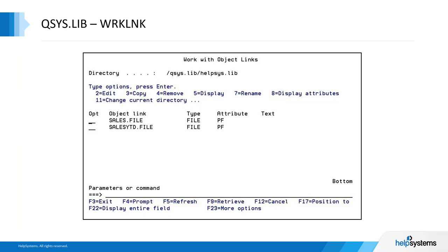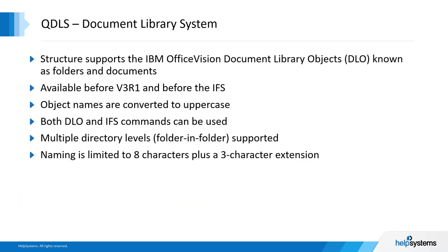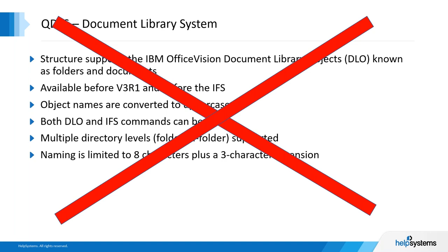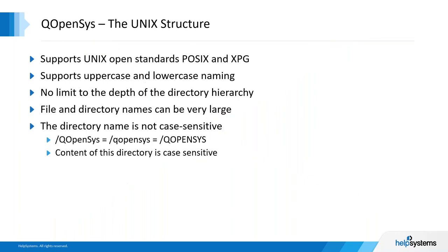Now let's look at another file system under the root: QDLS. This is an older file structure. You can see something called Office Vision listed there — Office Vision is long dead. The naming convention has eight characters on the left of the period and three on the right. The point is that many customers are still using this file system; however, it doesn't perform well and we really want you to get out of it. If you are still using it, it's time to move away — create a directory off the root. If you're storing PDF type documents, we absolutely recommend going in that direction and securing it.